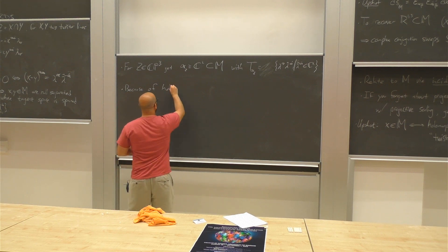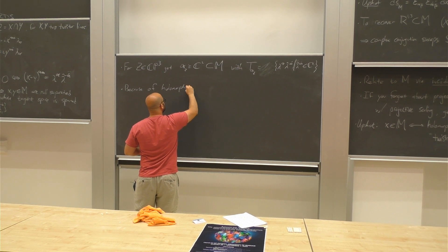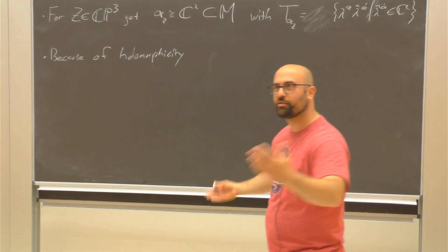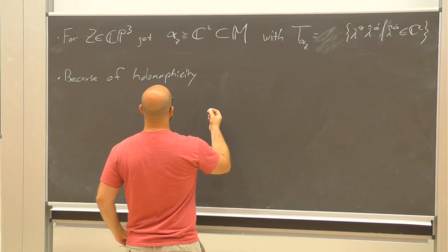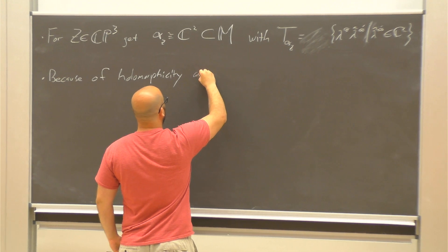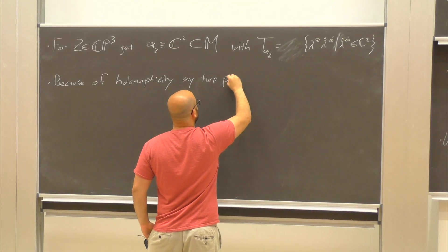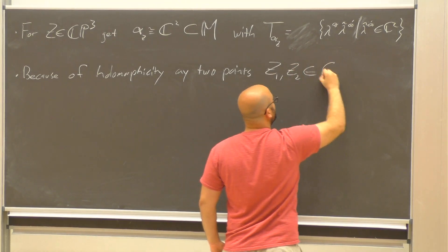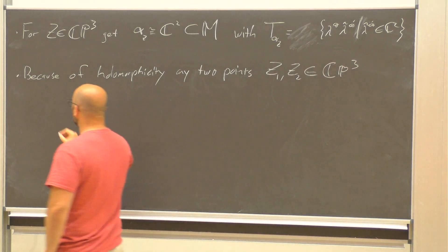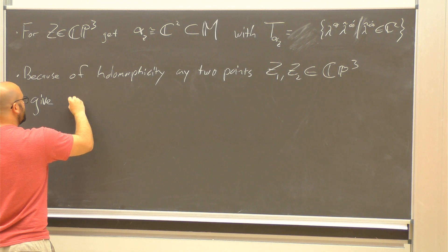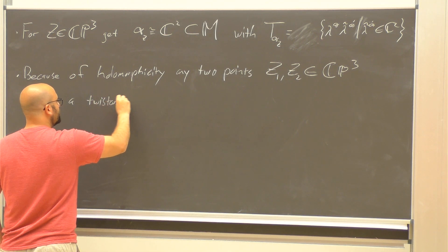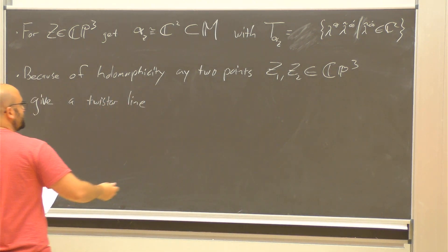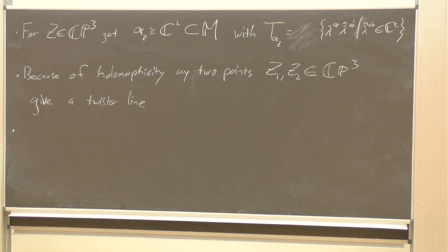Because of holomorphicity — the fact that twister lines can really be visualized as lines in R^3 — any two points Z^1 and Z^2 in CP^3 give a twister line. You can construct this explicitly by considering their skew span.